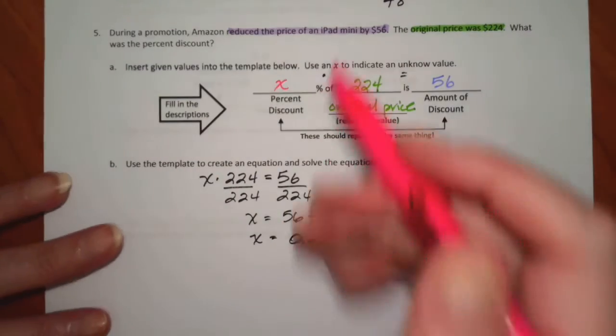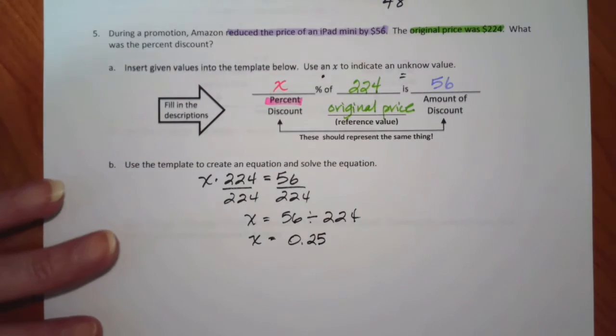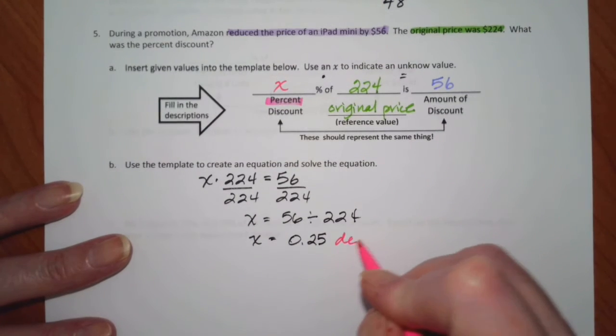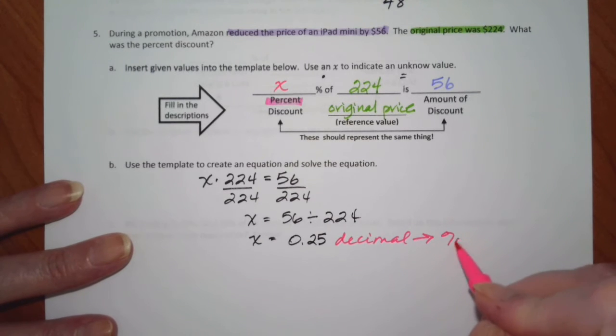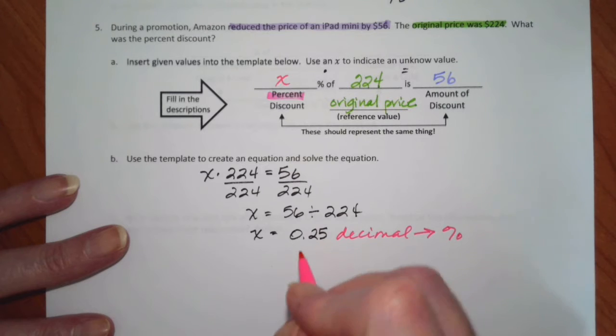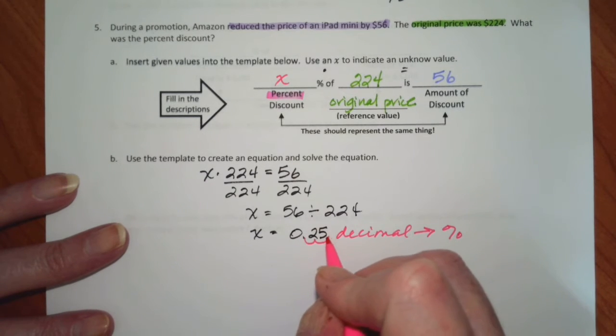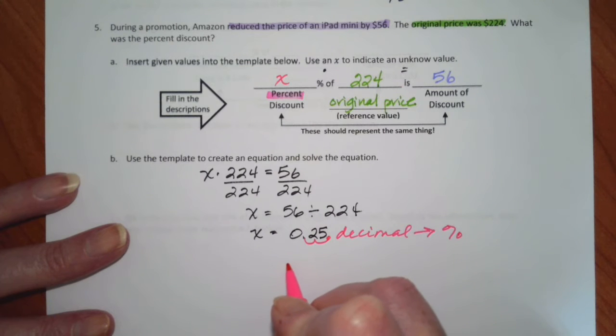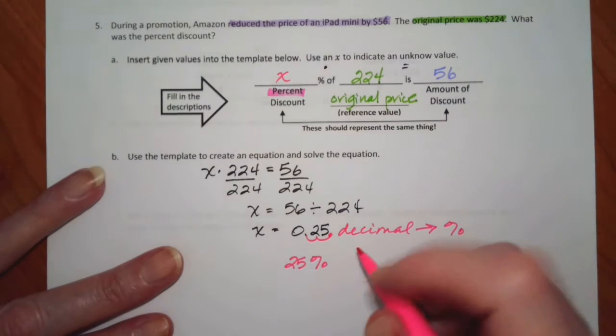But remember, this is a percent. I have to take this decimal and turn it into a percent. I take this and move it two places to the right, so the discount is 25%. And that is the amount of the discount.